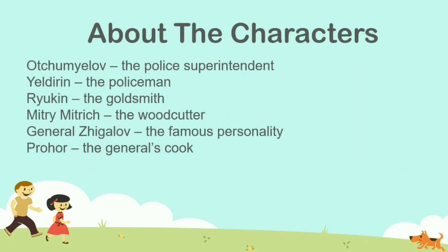Now let me introduce the characters to you. The first character is Ocha Mylov, the police superintendent, followed by Yeldrin, the policeman. Then we have Ryukin, who is the victim and the goldsmith. Then Maitri Mitrich, the woodcutter, and General Zigalov, a famous personality who is not physically present in the story but around whom the story revolves. Finally, we have Prohor, who is the general's cook.